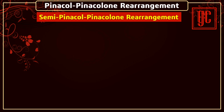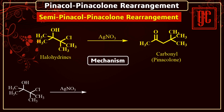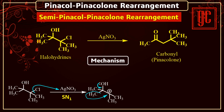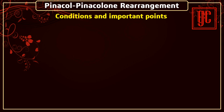Next is semi-pinacol pinacolone rearrangement. In this reaction, halohydrins give this reaction and Lewis acids are used for this purpose. In the presence of a Lewis acid, the halo group leaves the molecule and a carbocation is formed — here an SN1 mechanism takes place. In order to neutralize the carbocation, a 1,2-alkyl group migration takes place and ketones are formed.